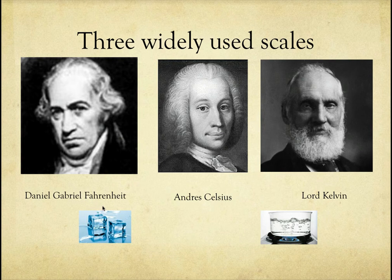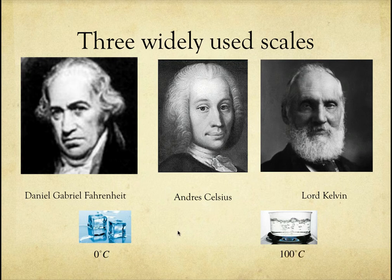What Celsius did is he assigned the freezing point to zero, boiling point to 100, which was easy because there is exactly 100 degrees between those two points. So he just took the scale, divided it into 100 little fractions, and that was the scale for Celsius.